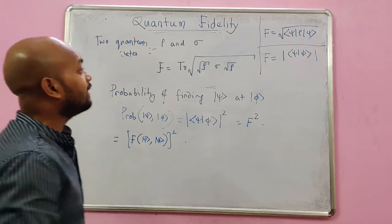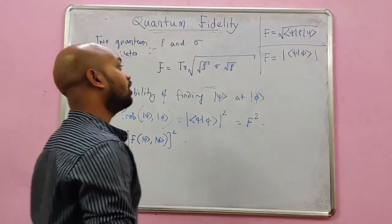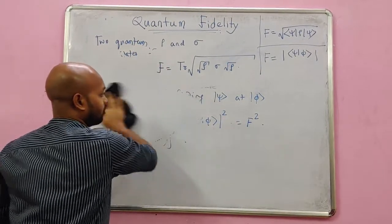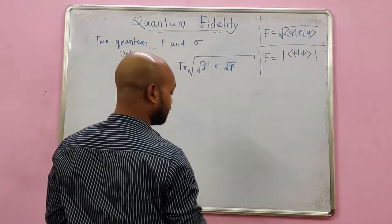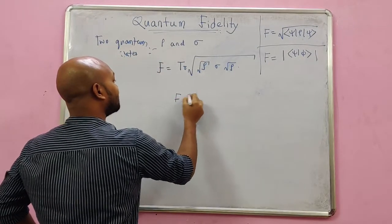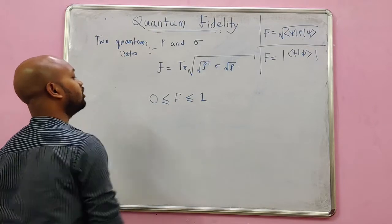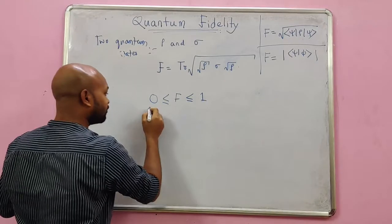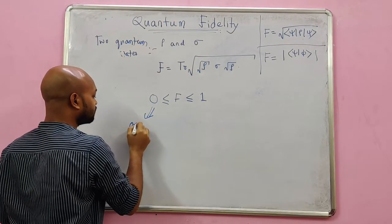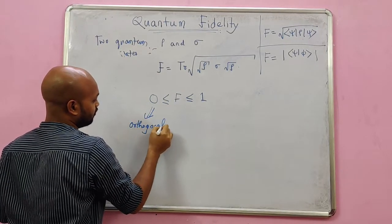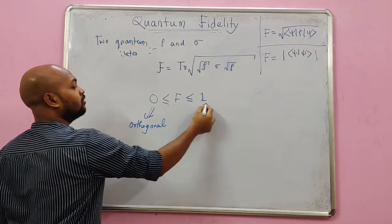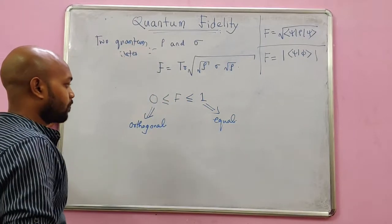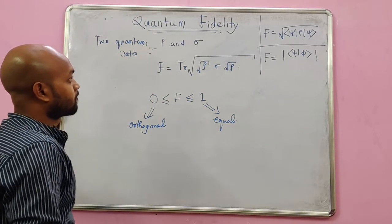Next, since it is an inner product - from this particular inner product ⟨ψ|φ⟩ - we could generalize the notion that fidelity ranges between 1 and 0. And it is going to be 0 when they are orthogonal, that means they are completely different, and it is 1 when they are same or equal.